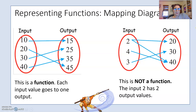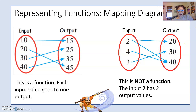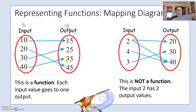Let's start with the mapping diagram, a pretty common way to represent a function. The inputs or x values are on the left, and the outputs or y values are on the right. The arrows show which input values go with which output values — 10 goes with 15, 20 with 45, 30 with 25, and 40 with 35. This is a function because each input value has one output value.